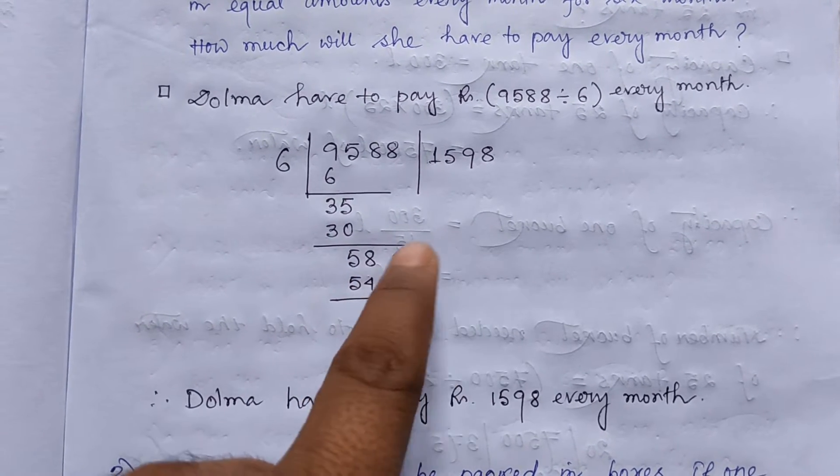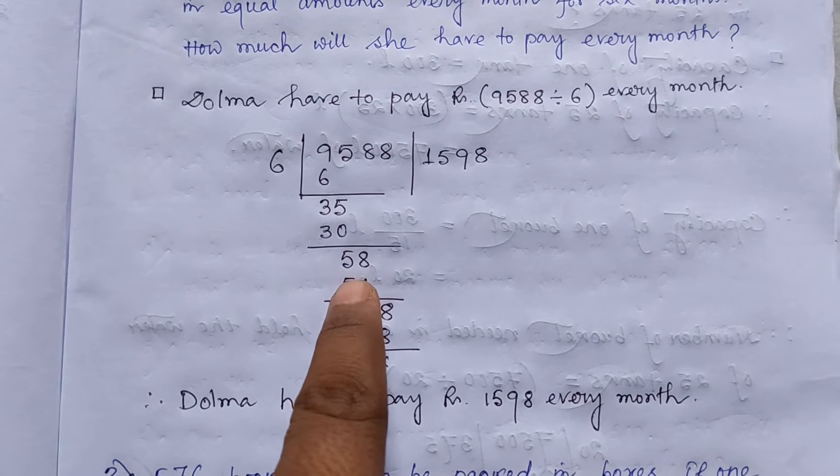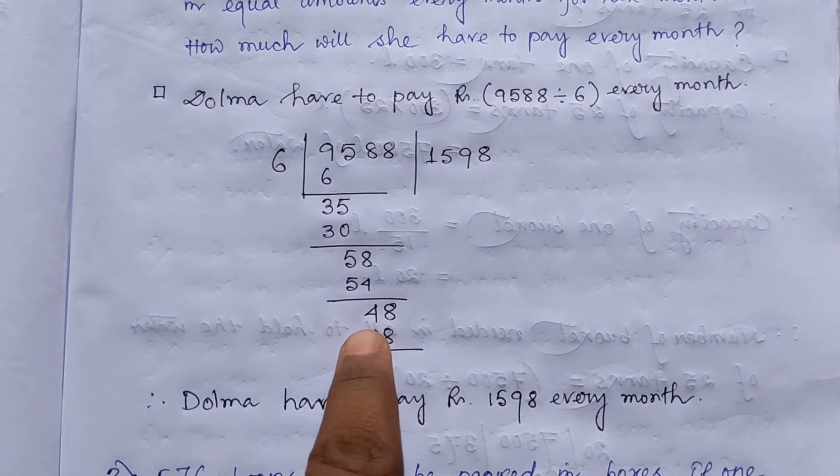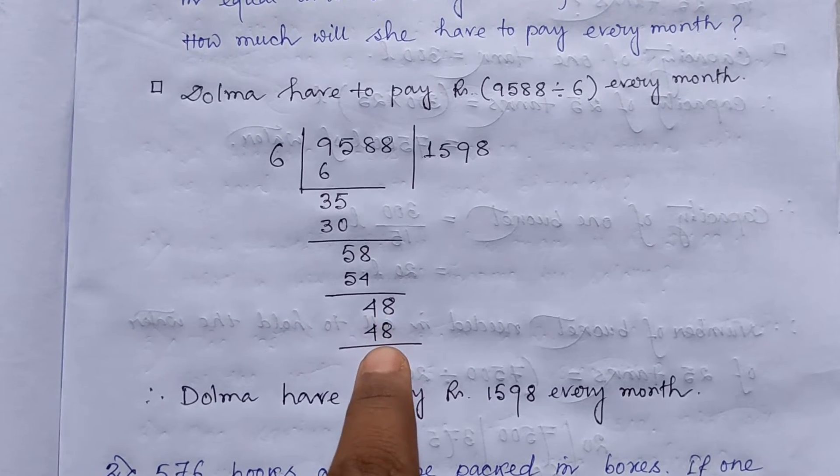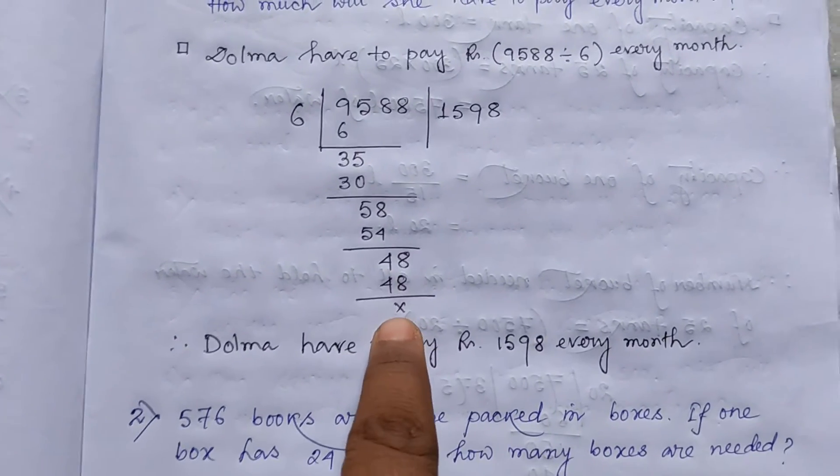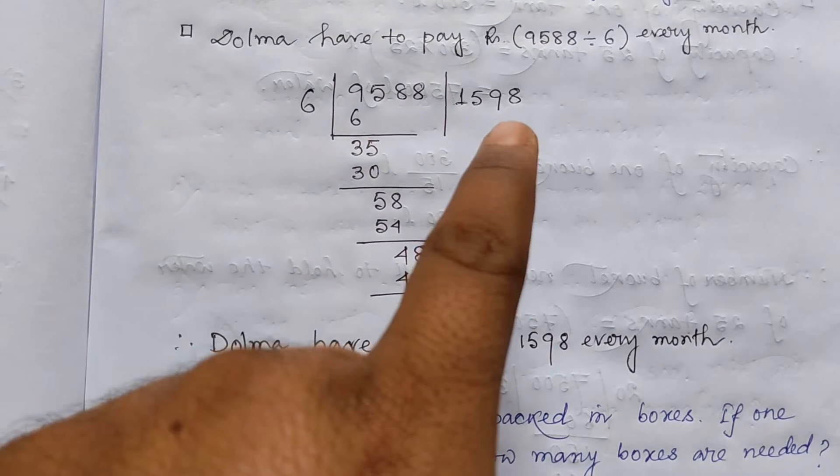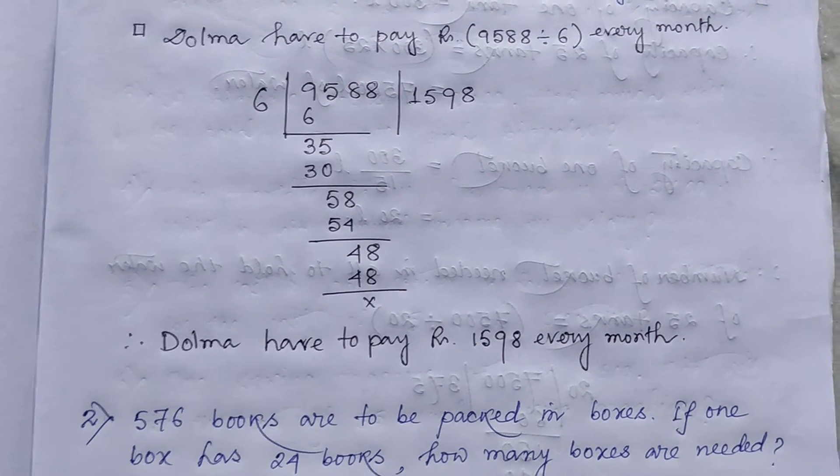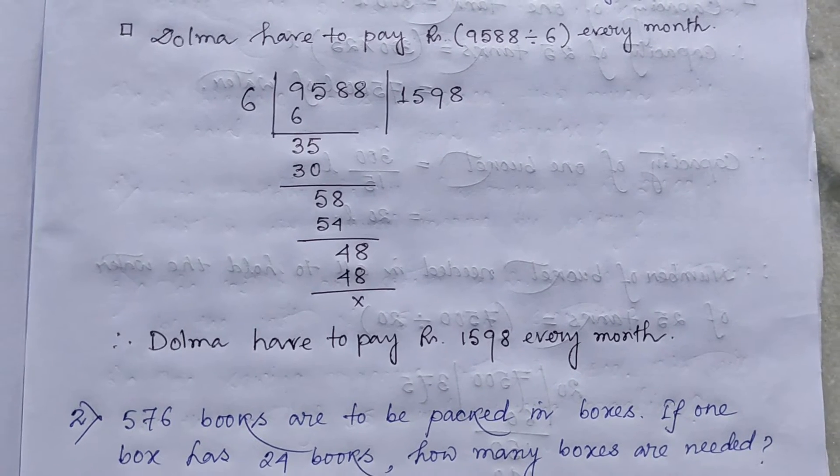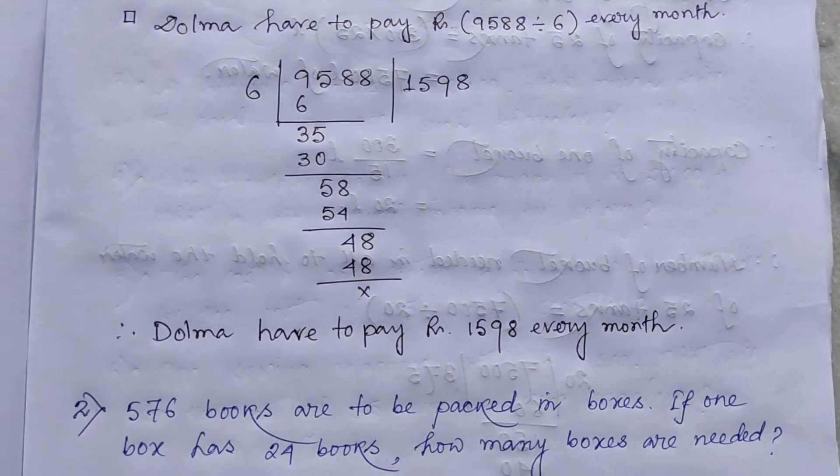Then 8 comes 58. 6 nines are 54. Then 4 remainder 48. 6 8s are 48. So ultimately 1,580. So Dalma have to pay rupees 1,598 every month.